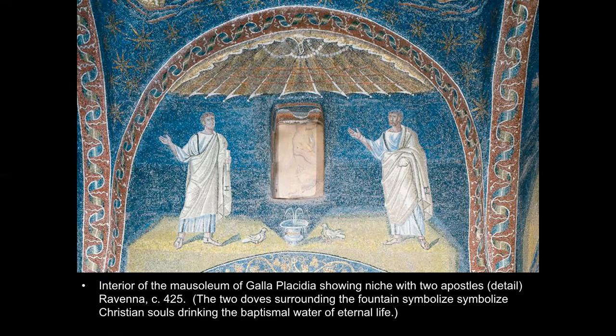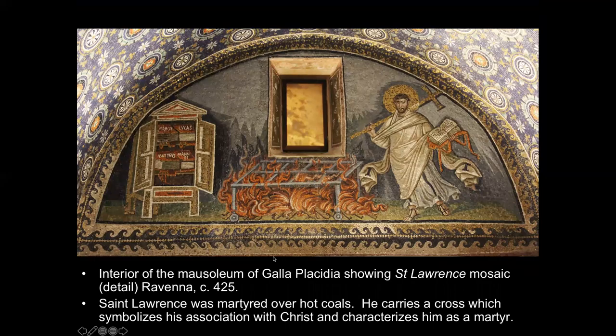The two apostles — the closest followers of Christ in the Gospels — are portrayed as if they are Roman senators: short hair, clean shaven, wearing robes that communicate importance. The way you communicate that someone is important when coming out of imperial times is to show them as someone recognizable as important — namely, a Roman senator. Then we get down to the Saint Lawrence mosaic.